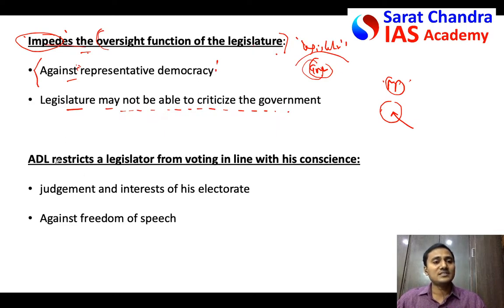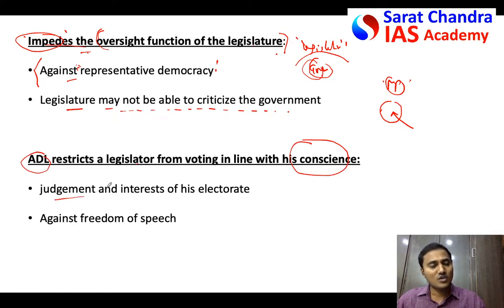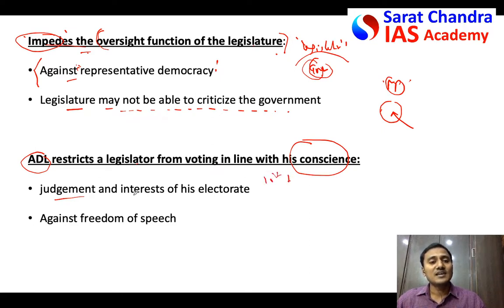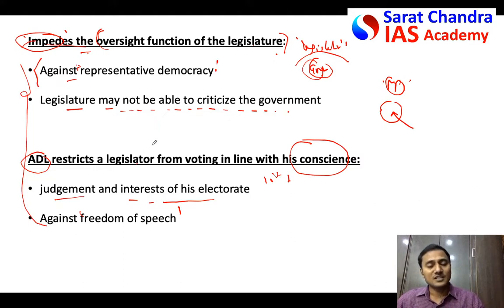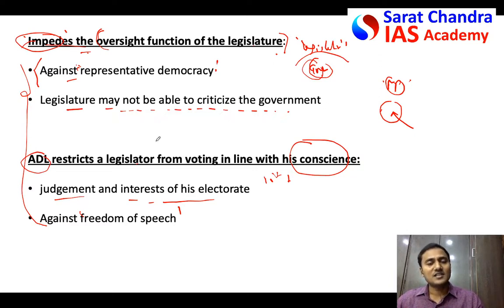The second point in the question is that anti-defection law restricts the legislator from voting in line with their conscience. Every MLA or MP has an individual judgment about government policy, but they cannot vote against their party due to the threat of disqualification under the 10th Schedule. This may force them to act against the interests of their electorate, which also conflicts with the freedom of speech of the MLA or MP. For the conclusion, suggest that the law is in the right spirit but its wording may need to be amended to achieve its actual goal.